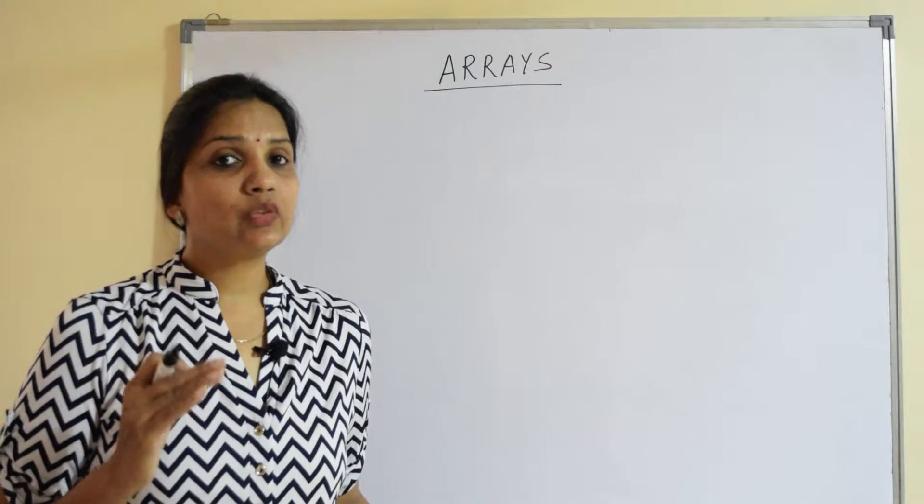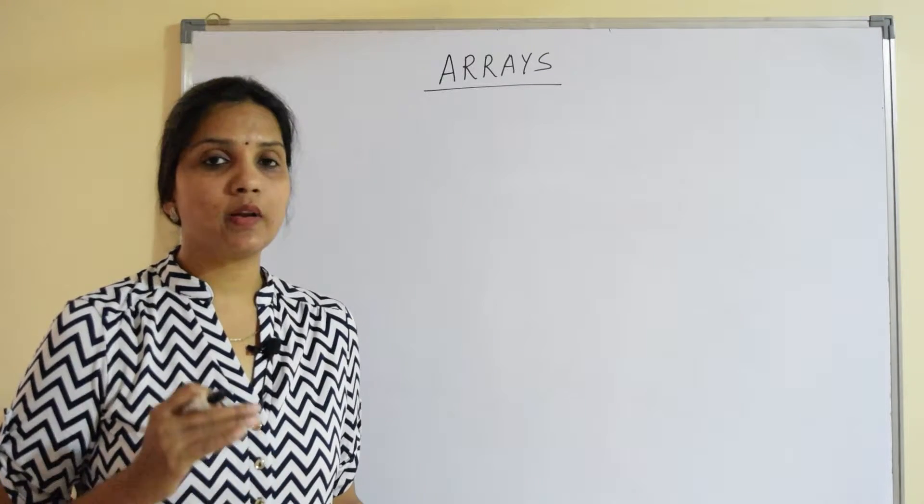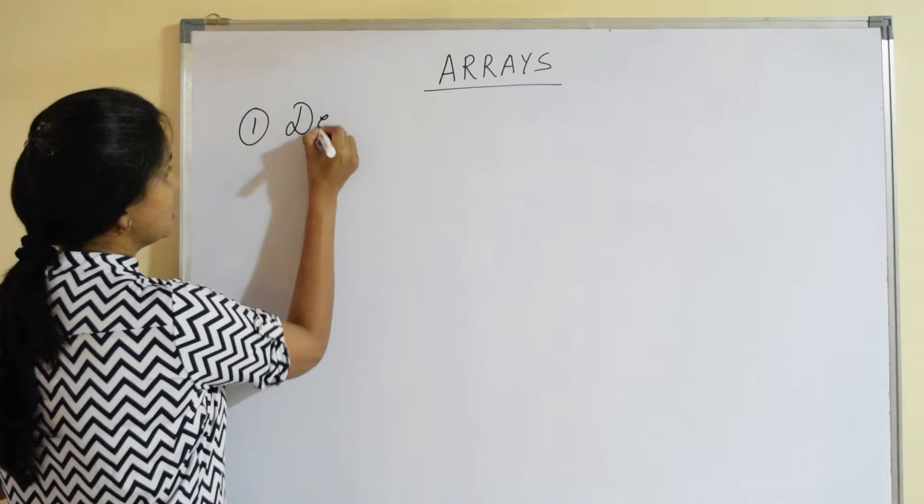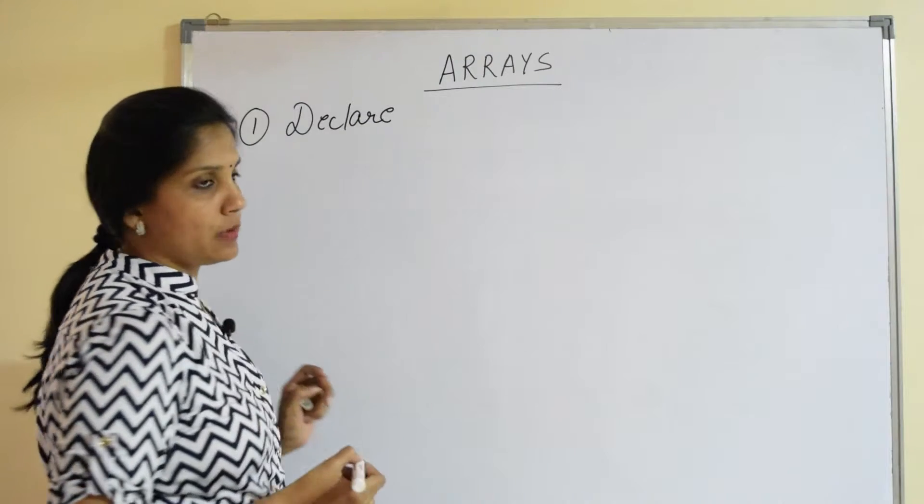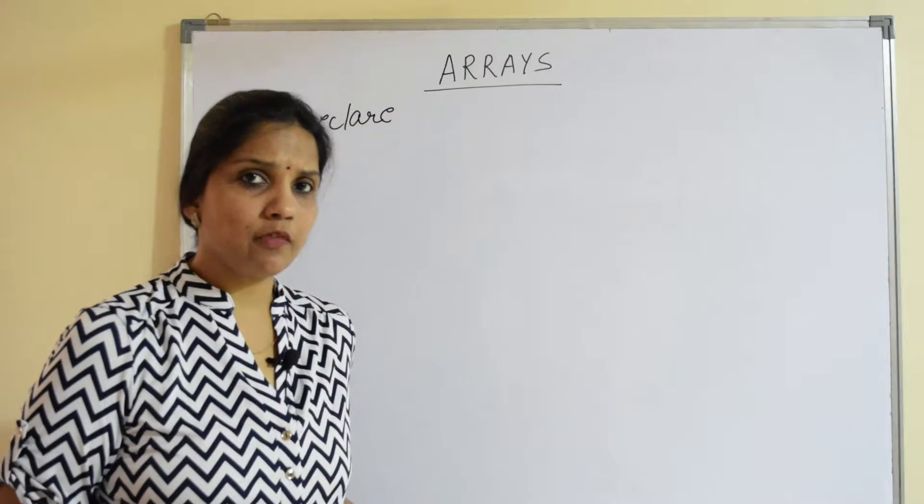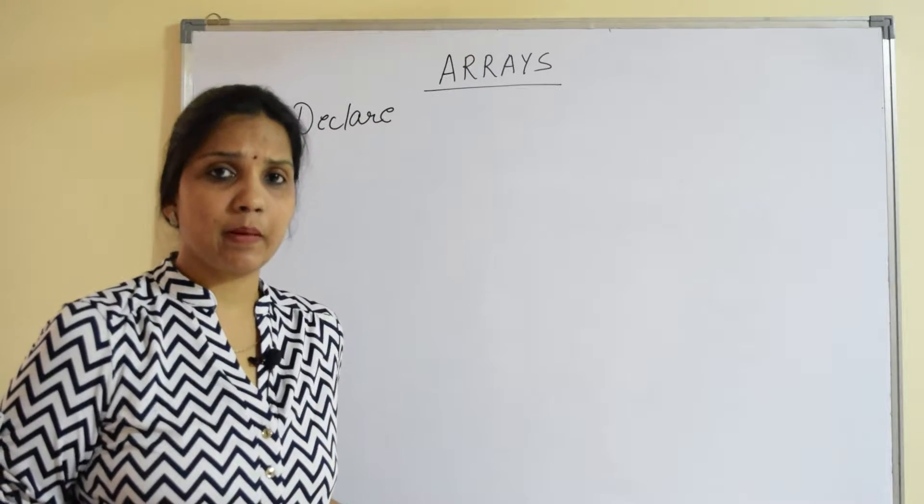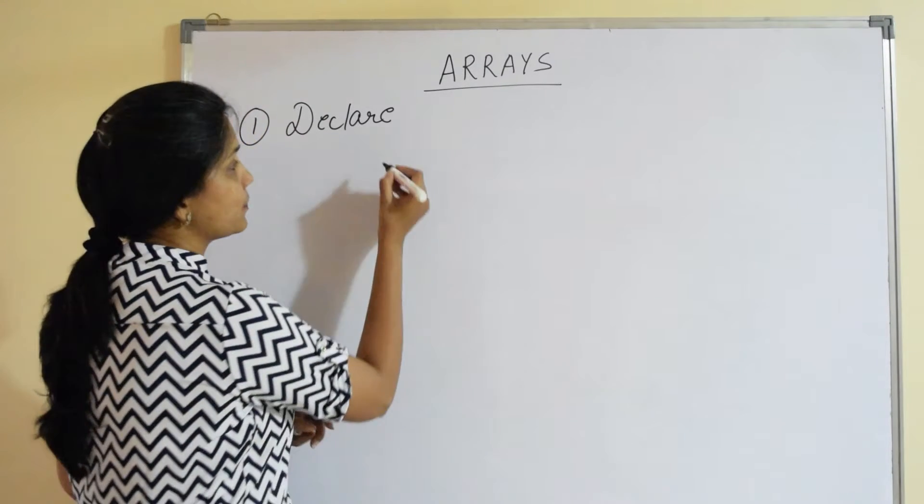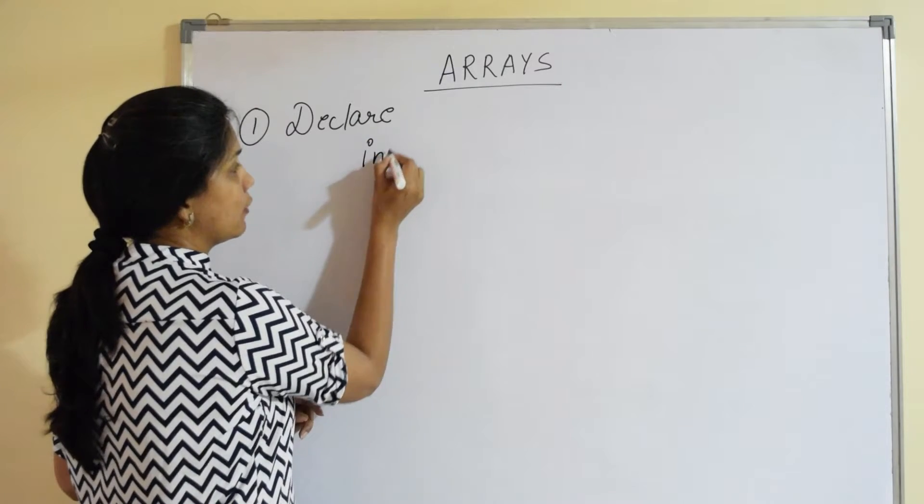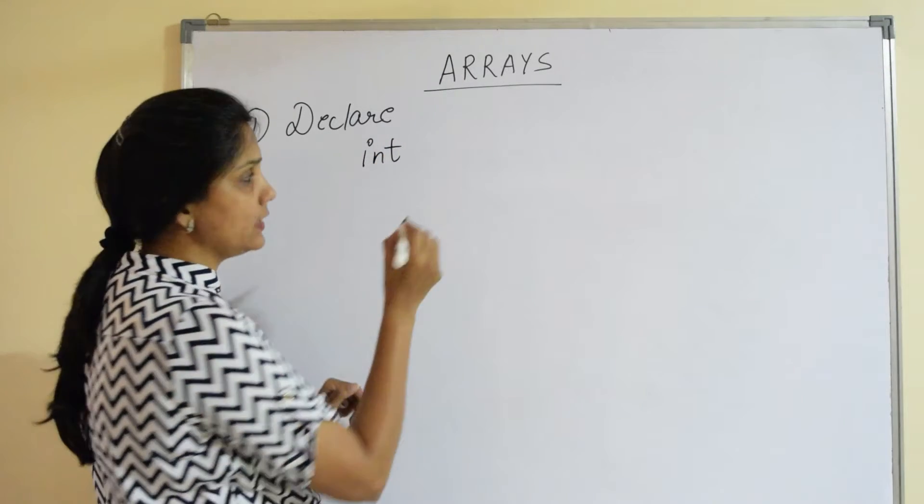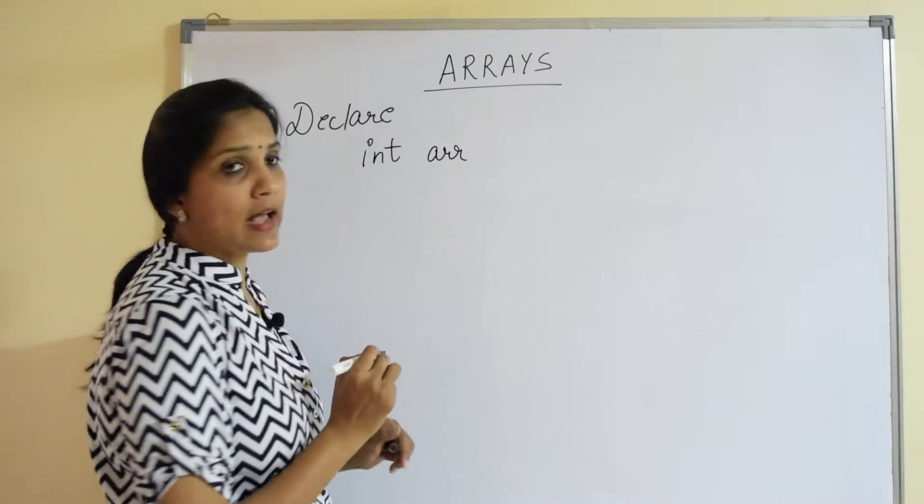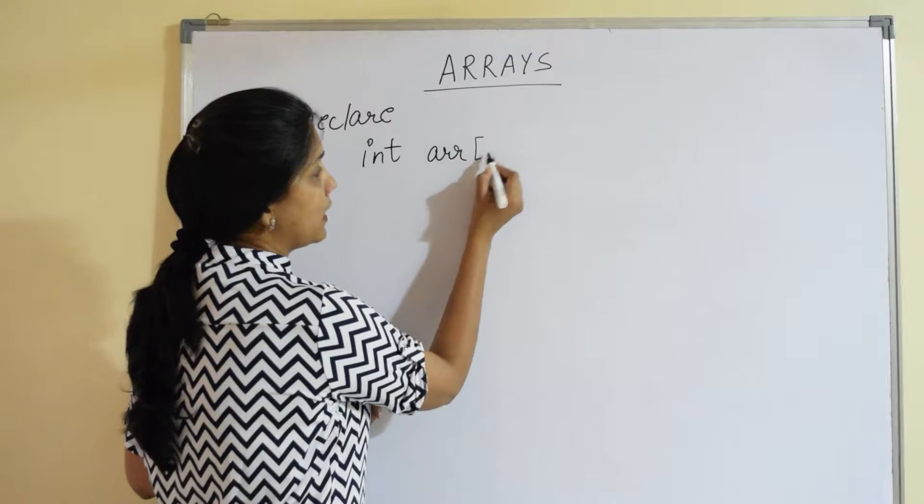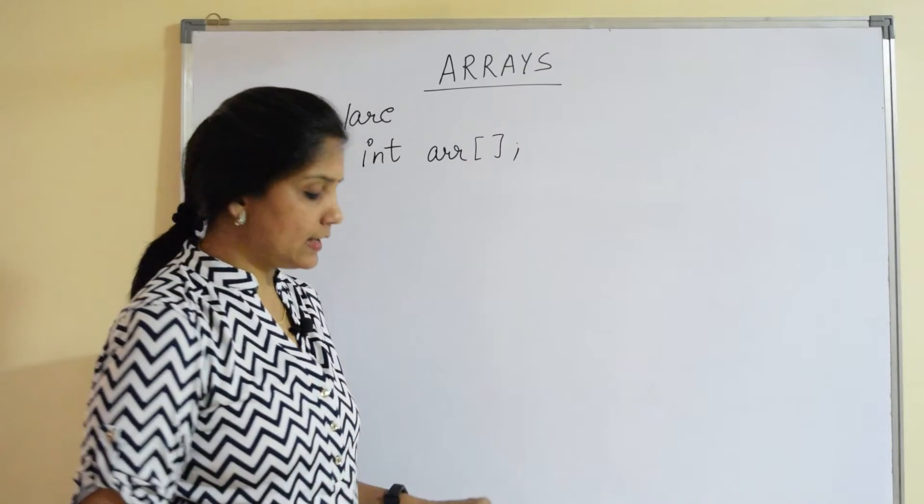So there are basically three steps that we do whenever we talk about arrays. First is declaration. The way we declare any variable, arrays are also normal variables just with special capabilities of holding more than one value. We definitely have to declare that. So declaration is: if I want to store integer values, int, the name of the variable arr, it can be anything, it's just a variable name followed by the square brackets. This is the syntax.